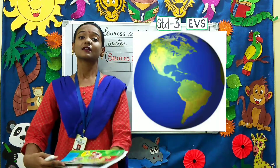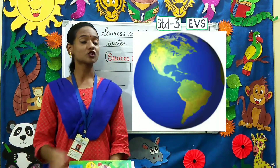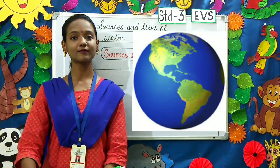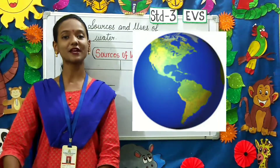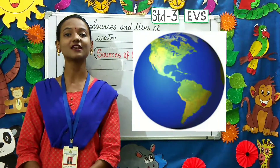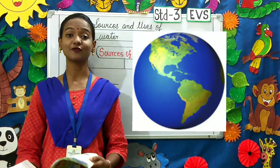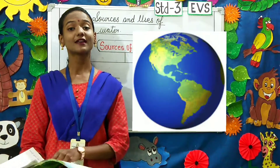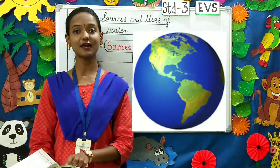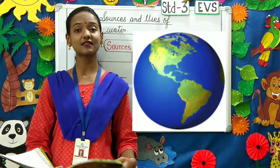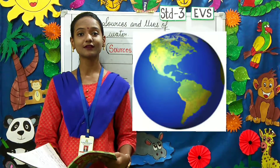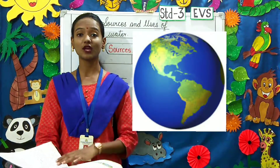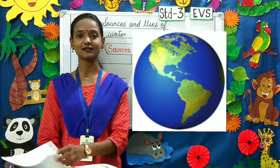Children, carefully watch on the screen. What can you see on the screen? It's a picture of the earth, the planet in which we live in. Can you tell me what colors can you see in the picture? We can see mainly green and blue colors.